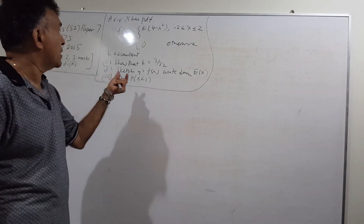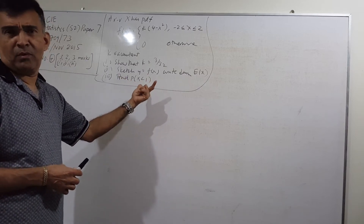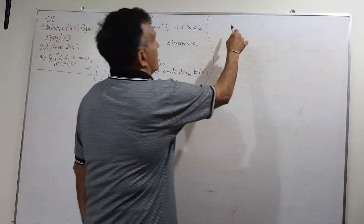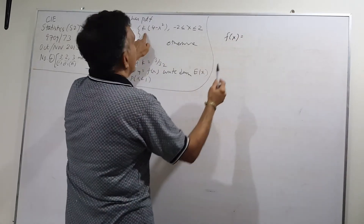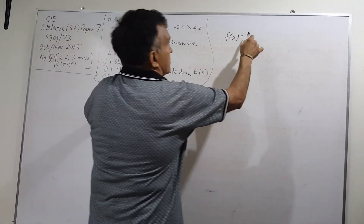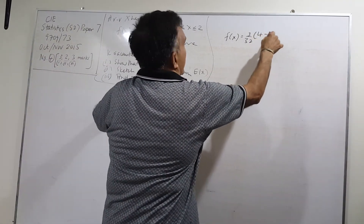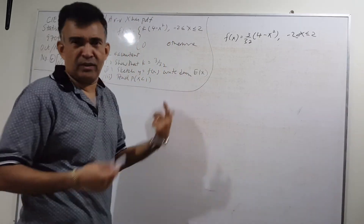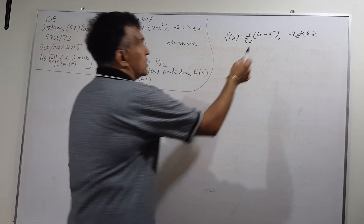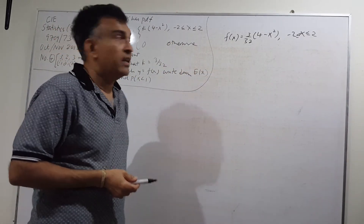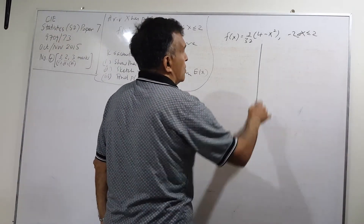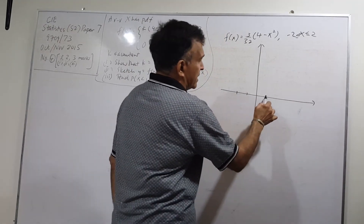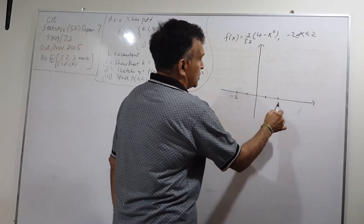Now for part 2. We are asked to sketch the curve and write down the expected value of X. The full PDF is: f(x) equals (3/32)(4 minus x squared) for x between negative 2 and 2, and 0 elsewhere. We sketch this as a simple quadratic curve over the interval from negative 2 to 2.